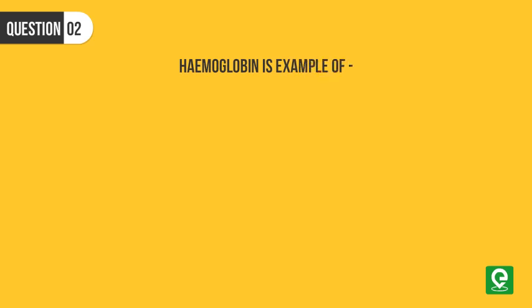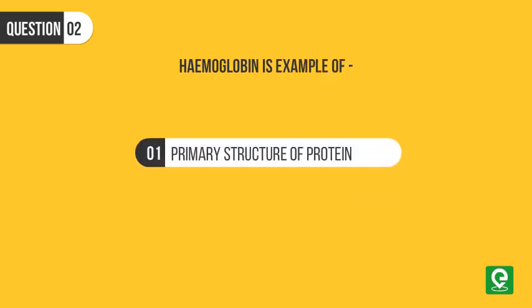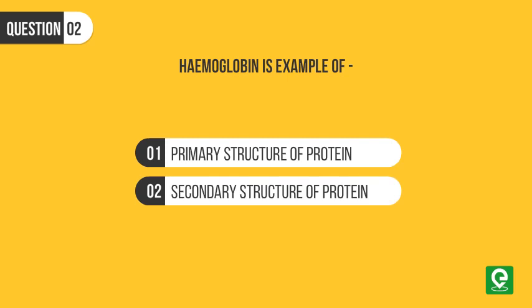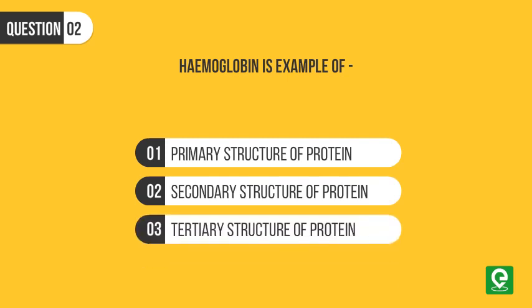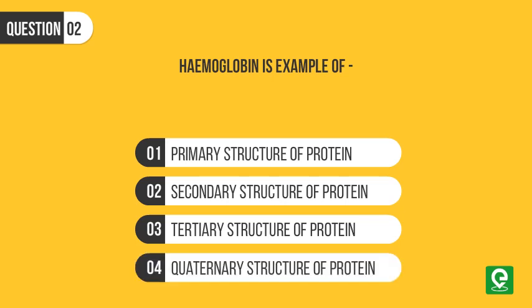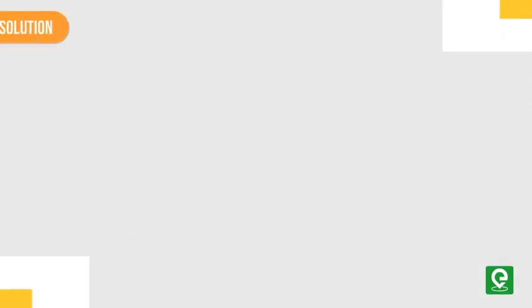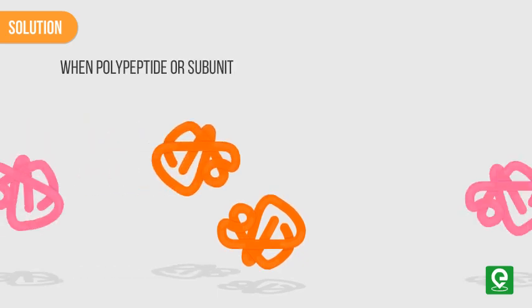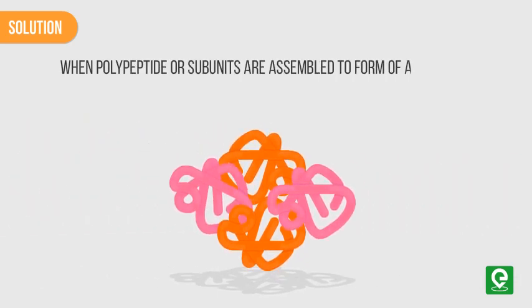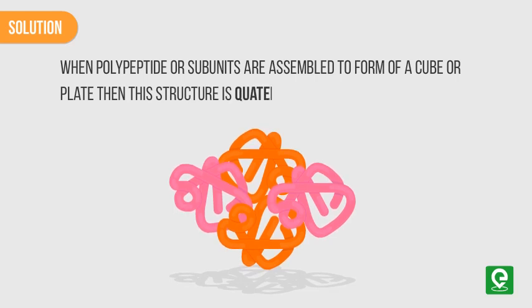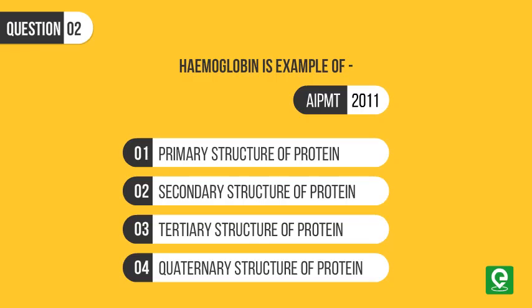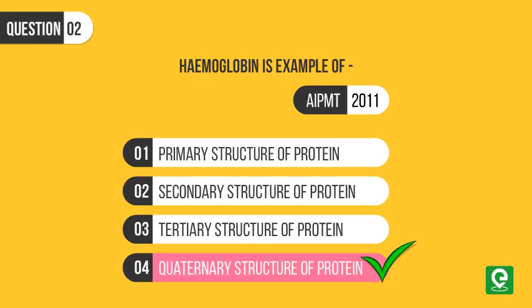Question 2: Hemoglobin is an example of which structure of protein? (1) Primary, (2) Secondary, (3) Tertiary, (4) Quaternary. This question was asked in AIPT MT 2011. Solution: When polypeptide subunits are assembled in the form of a cube or plate, the structure is quaternary — for example, hemoglobin. Hence, option 4 is the correct answer.